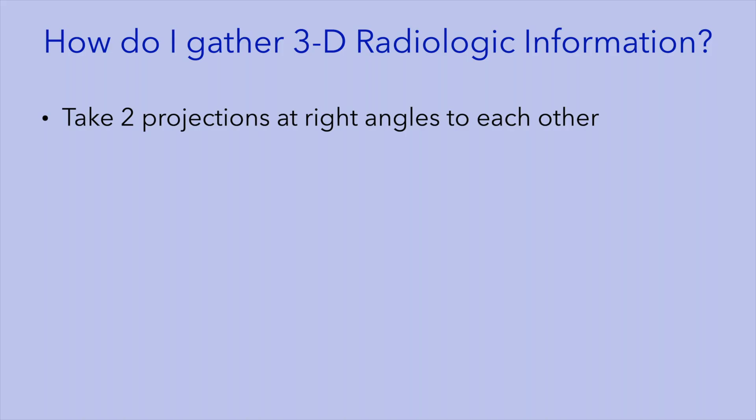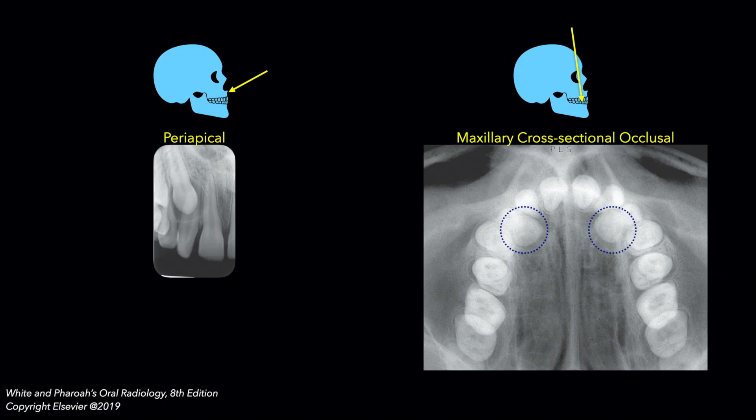A second approach to deciphering the third dimension is to take two radiographs that are at right angles to each other. In the case presented here, that combination would be a periapical and a cross-sectional maxillary occlusal radiograph. Note that the occlusal radiograph demonstrates the palatal location of the impacted canines, an assessment that could not be made on the periapical radiographs.